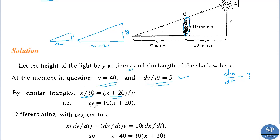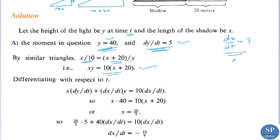That means xy equals 10 into x plus 20. So we have to find dx by dt when dy by dt equals 5 and y equals 40. Differentiating with respect to t and applying the product rule, we have x into dy by dt plus y into dx by dt equal to 10 into dx by dt. We need to find the value of x, but we have y equals 40 and dy by dt equals 5 but we do not have the value of x.